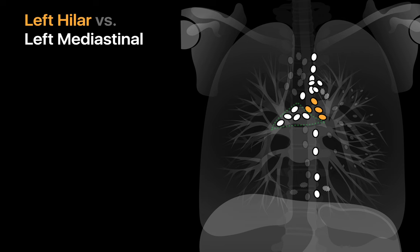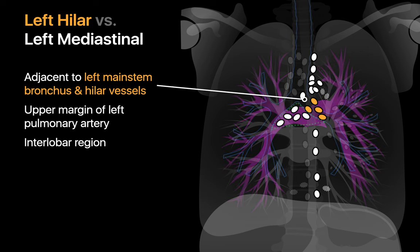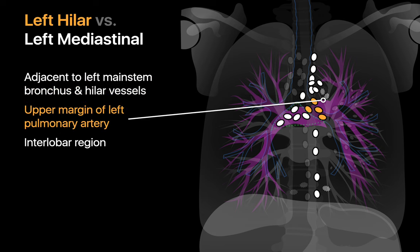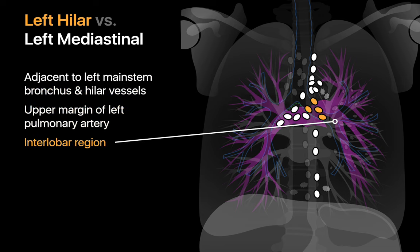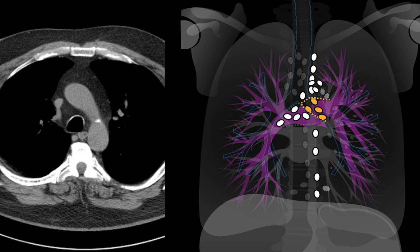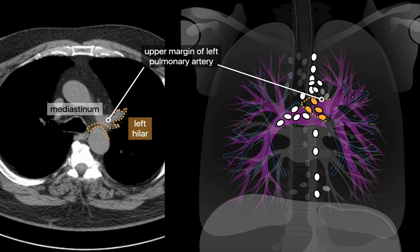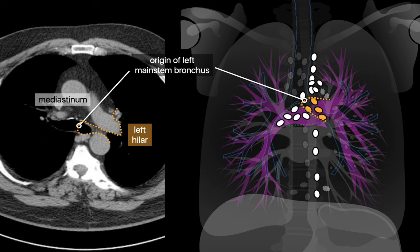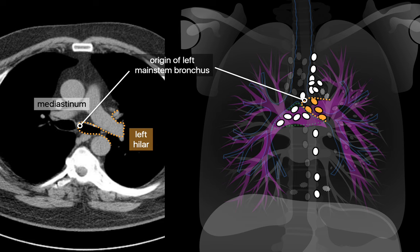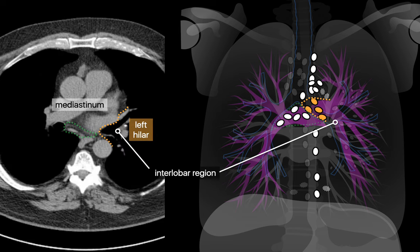When is a lymph node left hilar versus mediastinal? Left hilar lymph nodes are adjacent to the left mainstem bronchus and hilar vessels. The boundary is defined by the left mainstem bronchus origin, the upper margin of the left pulmonary artery, and the interlobar region at the bifurcation of the left mainstem bronchus. The left hilar station begins as soon as you see the left pulmonary artery, extends medially to the origin of the left mainstem bronchus, abuts the subcarinal station, and ends after the bifurcation of the left mainstem bronchus.